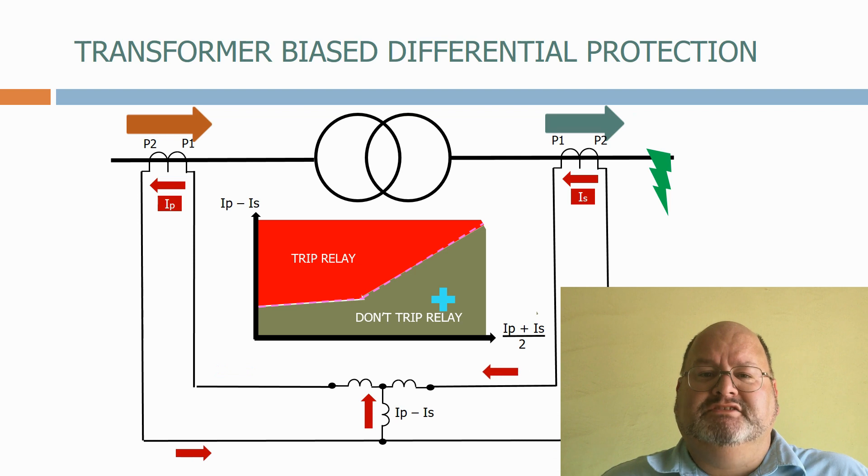If transformer differential biasing wasn't used, all of the currents that pass through the transformer on the way to the fault on the network would destabilize the transformer differential protection, and trick it into believing that the fault was actually on the transformer.